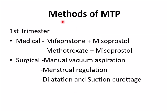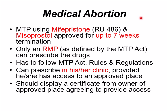Methods of medical termination of pregnancy in the first trimester include: medical methods using mifepristone (RU-486) plus misoprostol, or methotrexate plus misoprostol, approved for up to seven weeks of termination. Surgical methods include menstrual regulation, manual vacuum aspiration, and suction curettage. Only an RMP as defined by the MTP Act can prescribe these drugs, must follow MTP Act rules and regulations, and must have access to an approved place.